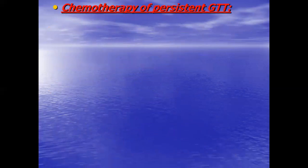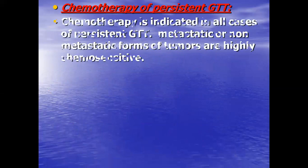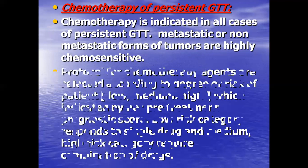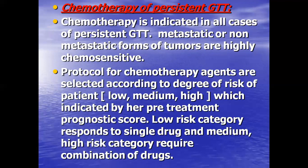Chemotherapy is indicated in all cases of persistent gestational trophoblastic tumor. Both metastatic and non-metastatic forms are highly chemosensitive. Protocols are selected according to the degree of risk — low, medium, or high — as indicated by the pre-treatment prognostic score. Low risk category responds to single drugs, while medium and high risk categories require combinations of drugs.